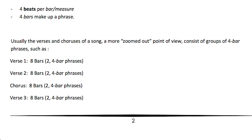There are four beats per bar or measure in 4/4 time, and generally four bars might make up one phrase. For example, verse 1 of a song could be 8 bars long, which are two 4-bar phrases, or even one complete 8-bar phrase, depending on the song.